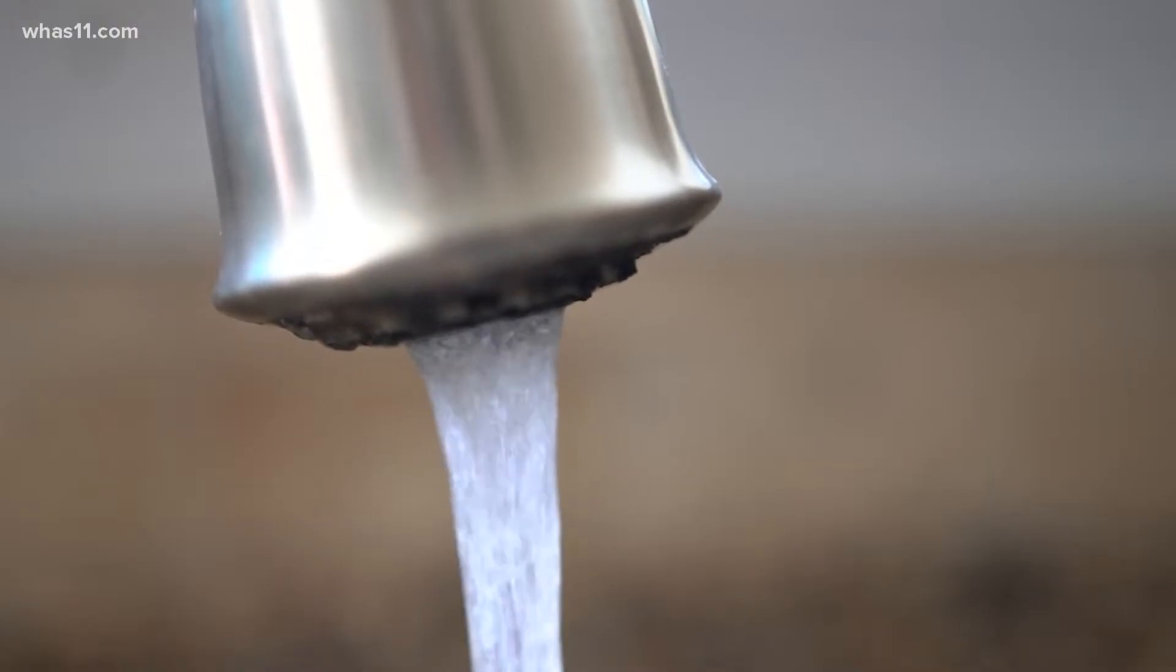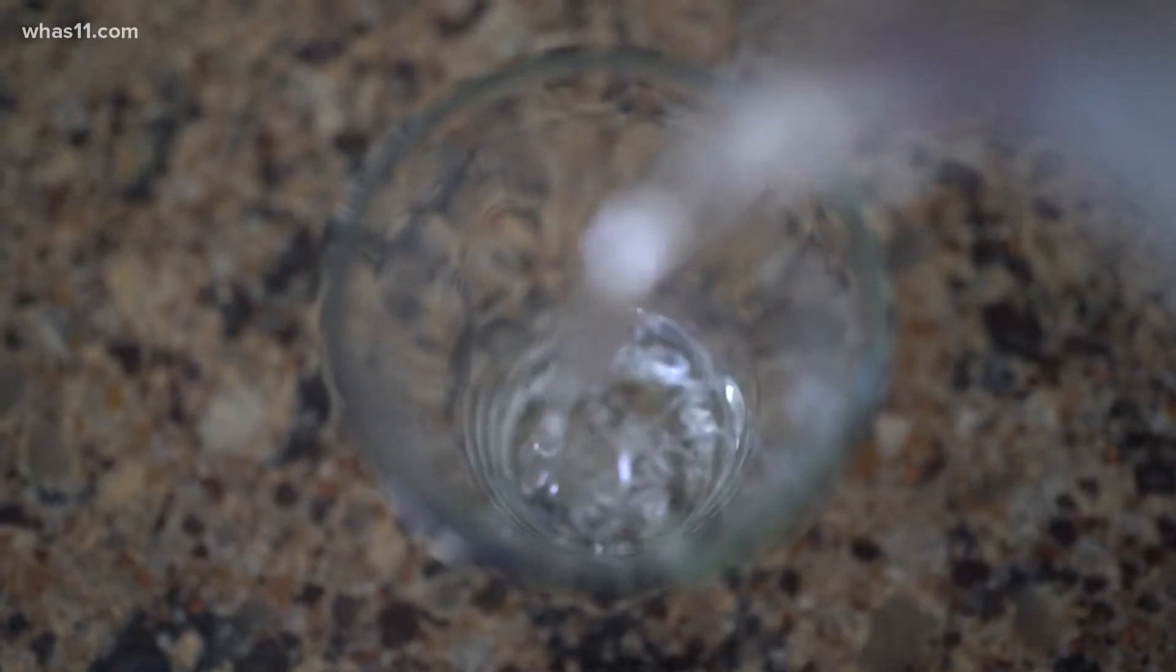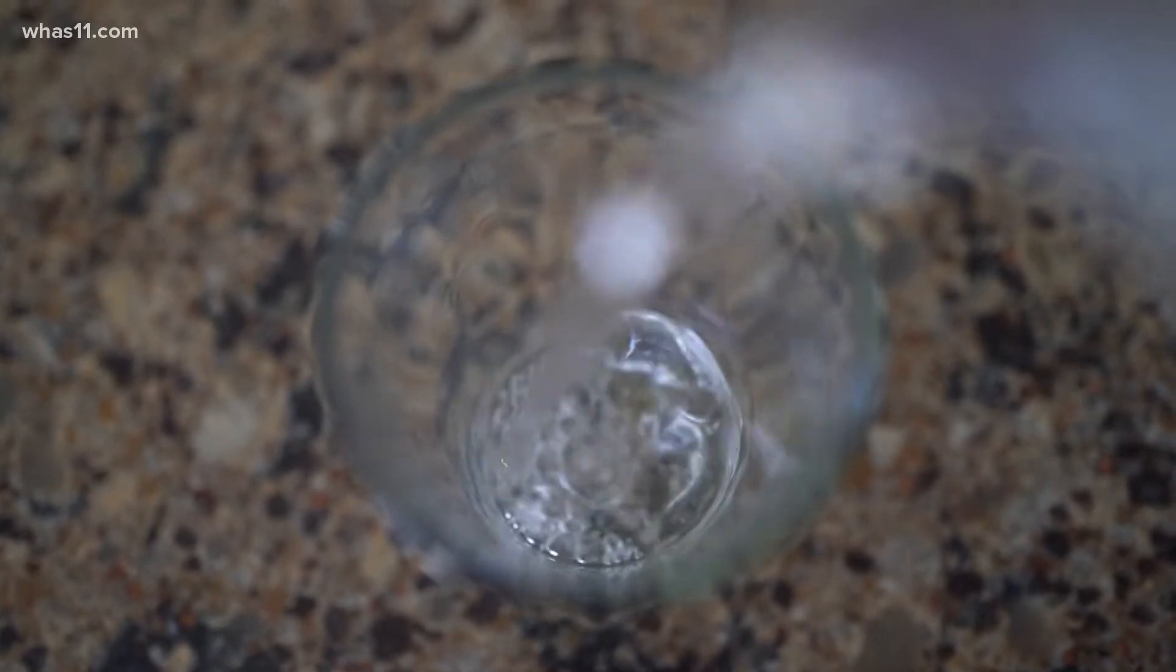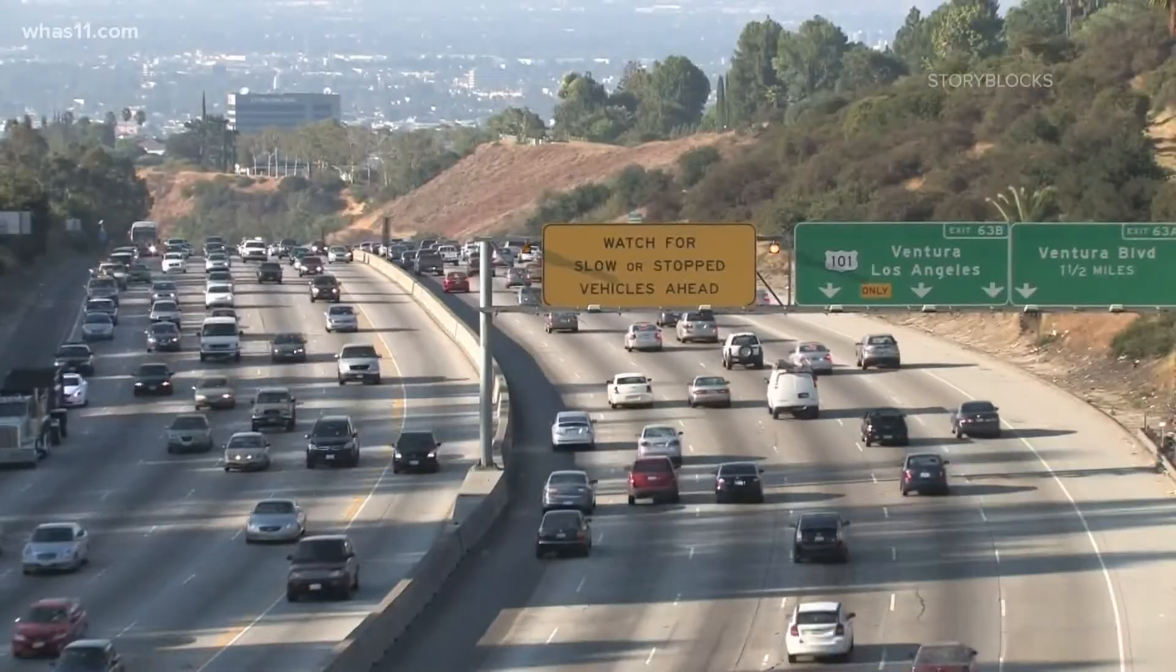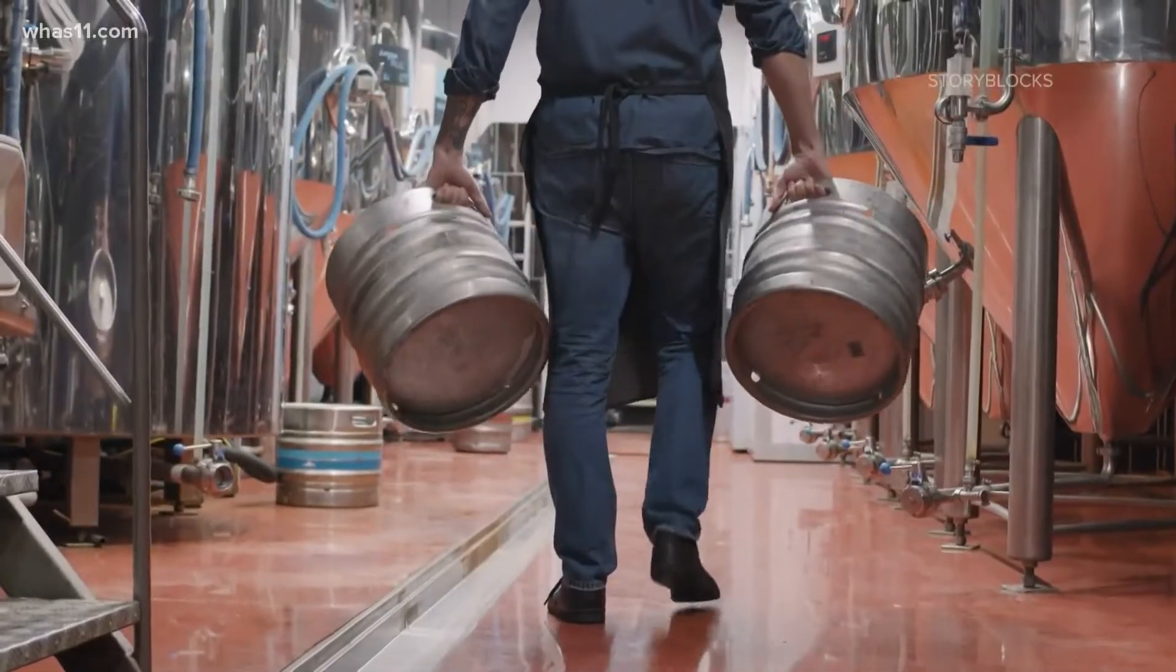Two of beer's main ingredients are highly subject to climate change. First, there's water. Each gallon of beer requires about five to six gallons of water to produce. The WWF says that could be problematic for drought-laden states like California, which has the most breweries in the nation.